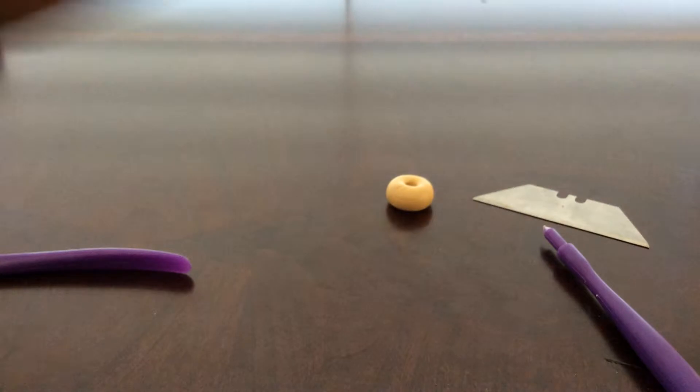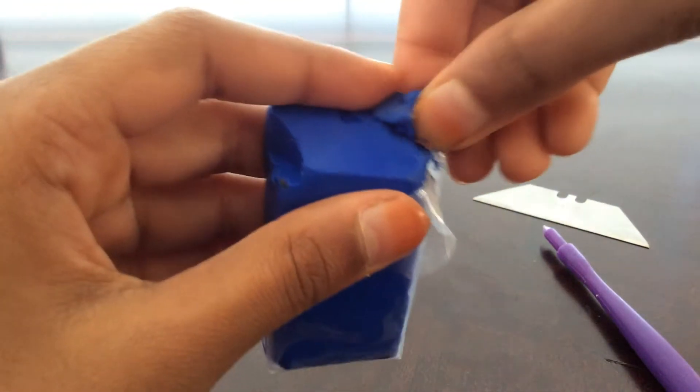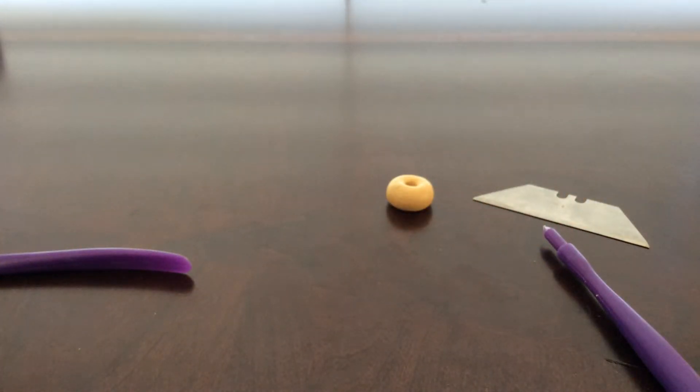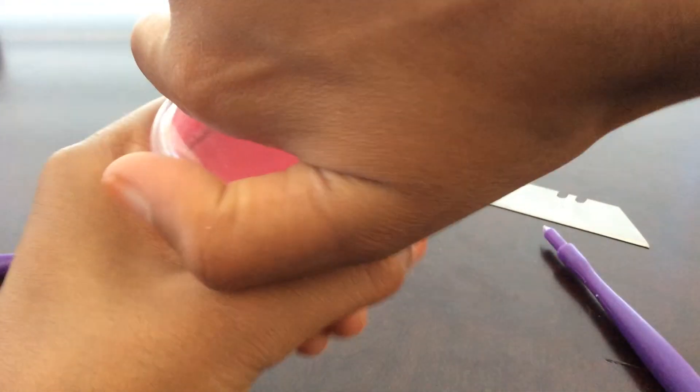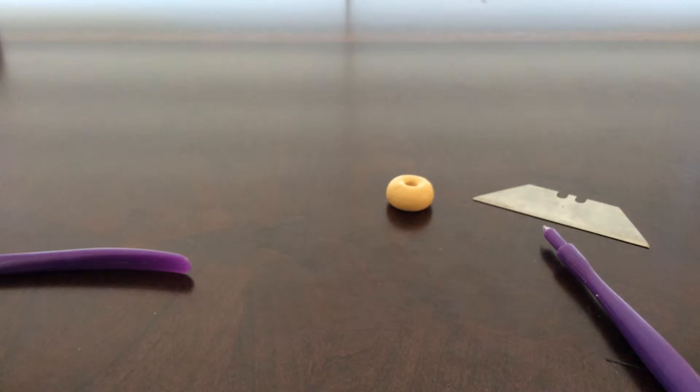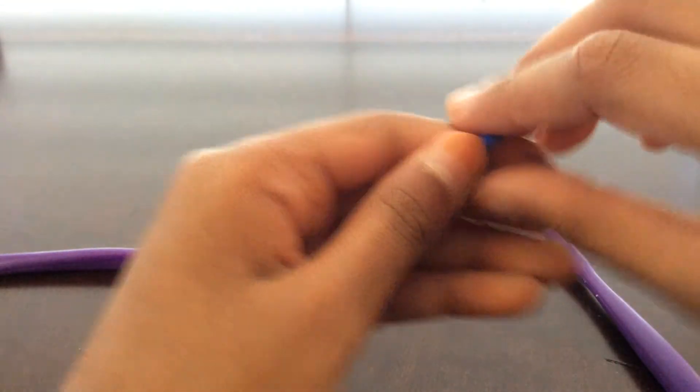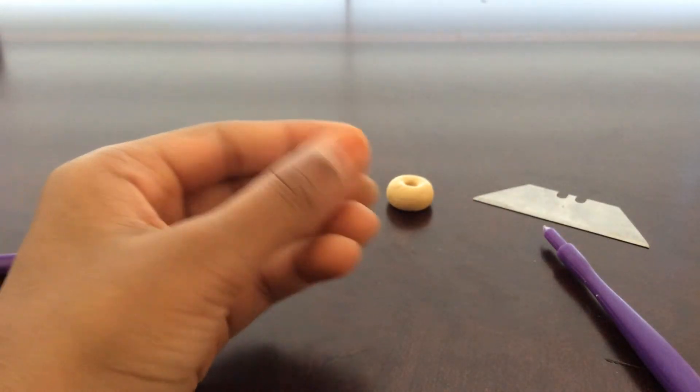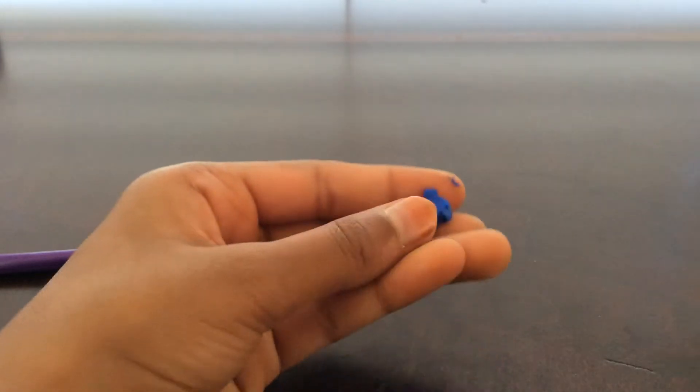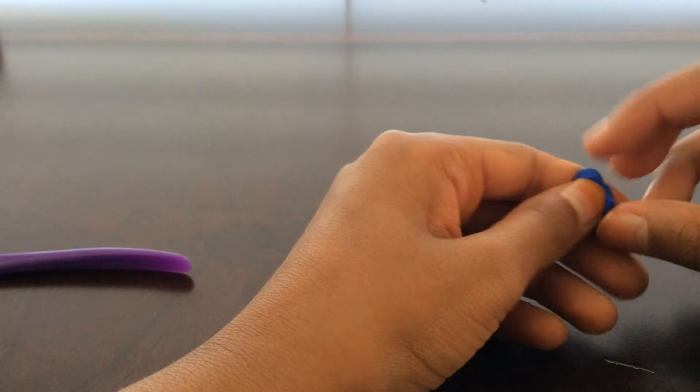And then you're going to take whatever color clay you're using for the frosting or icing part. But first, you're going to apply your icing. So I'm just going to open it. Actually, what I'm going to do is I'm just not going to apply the frosting, and I'm just going to make the sprinkles. But you're going to apply the frosting if you want to.